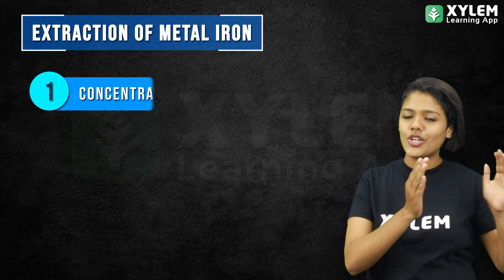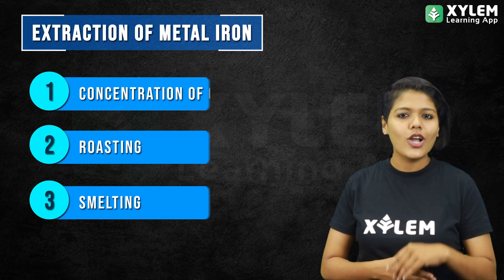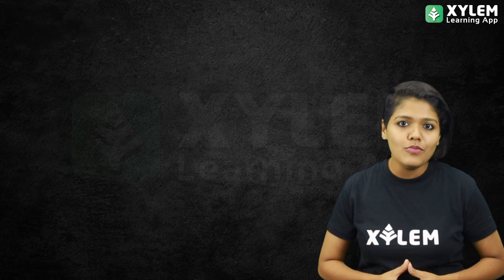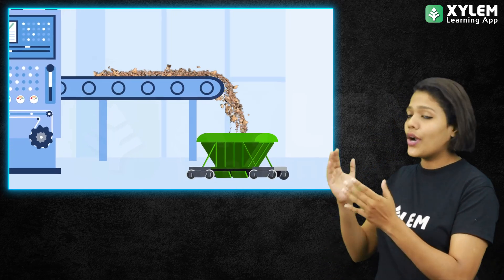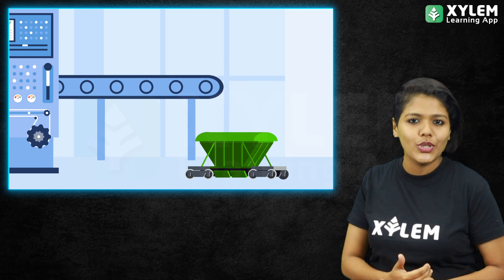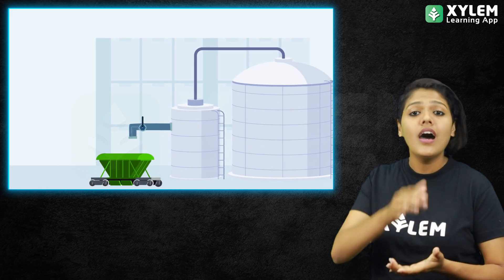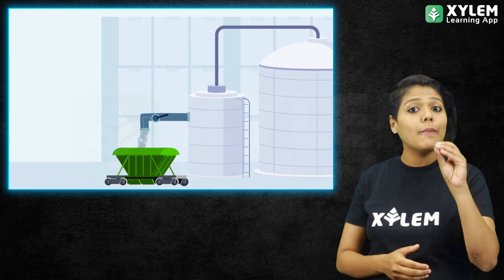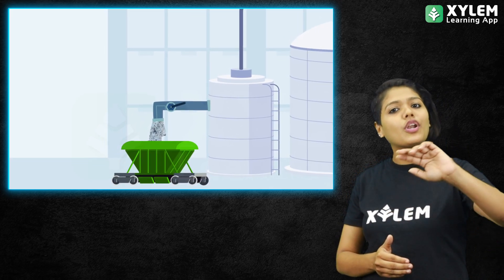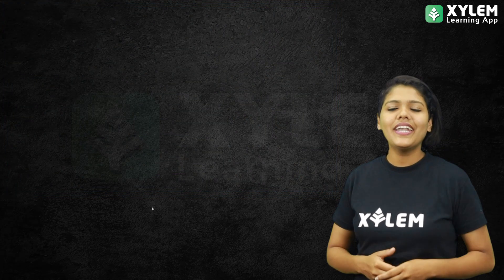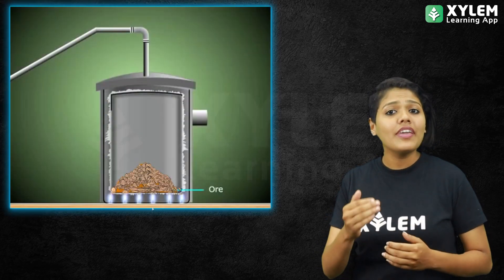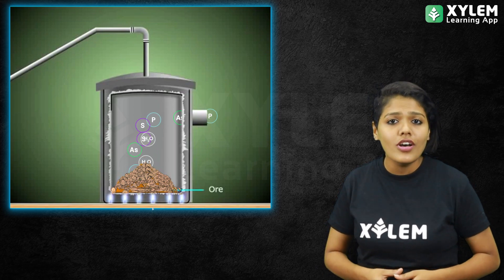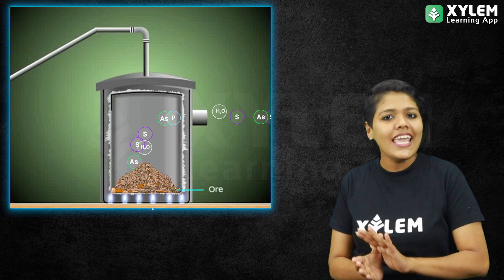The extraction of the metal iron involves: concentration of ore, roasting, and smelting. This is the concentration of ore — this is how we do it. This is the hematite iron. This is the impurities. This is how we crush the hematite iron, which we will remove.